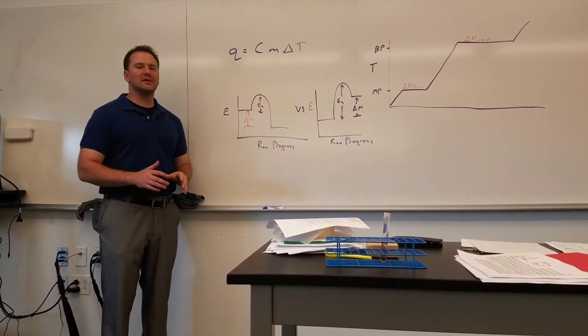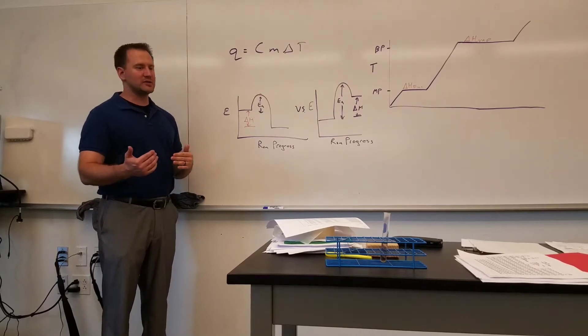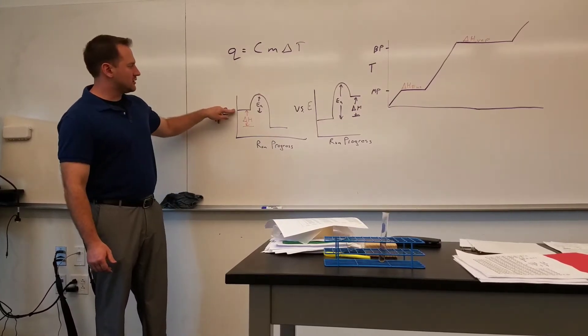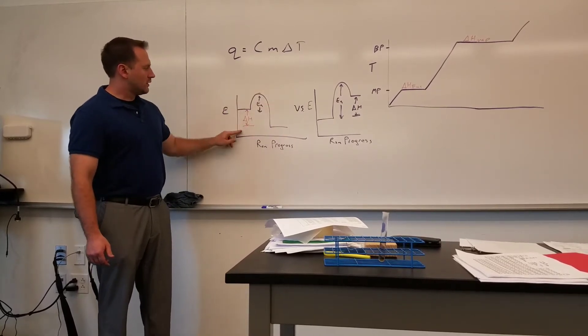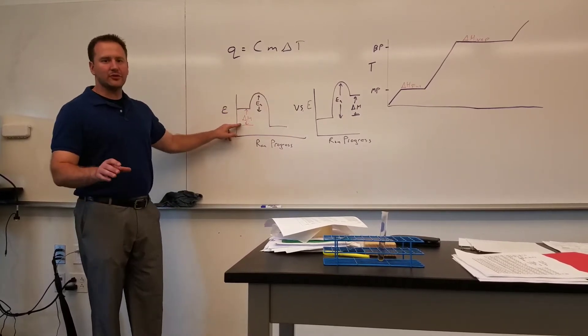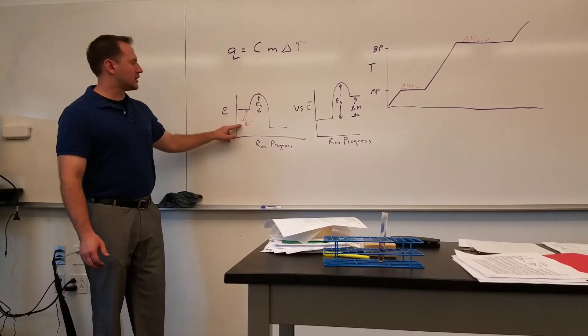When a reaction is exothermic, that means it releases energy during the process. The potential energy of the products is lower than that of the reactants, and you can see that here. Delta H represents the enthalpy, or essentially the energy change of a reaction.